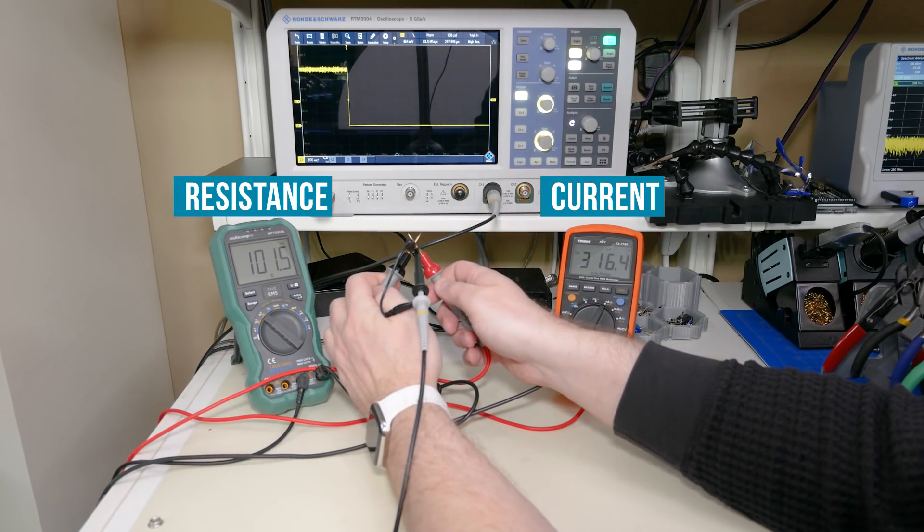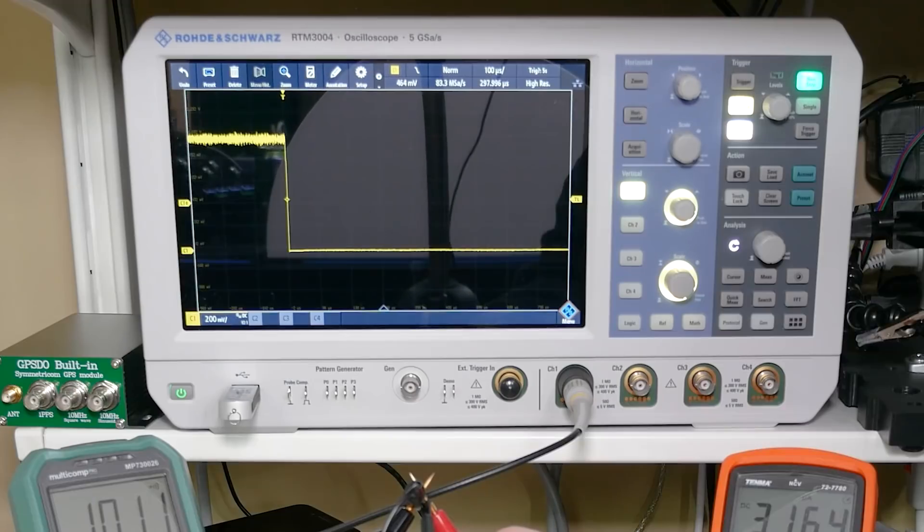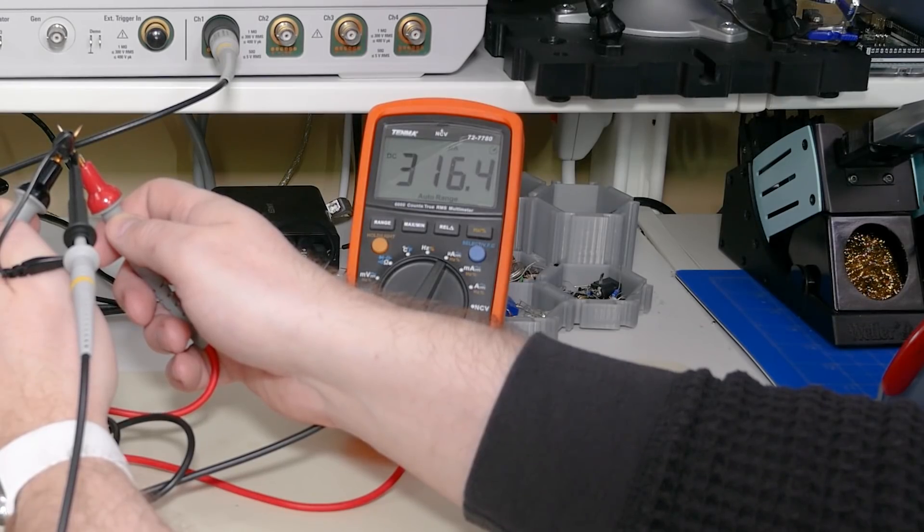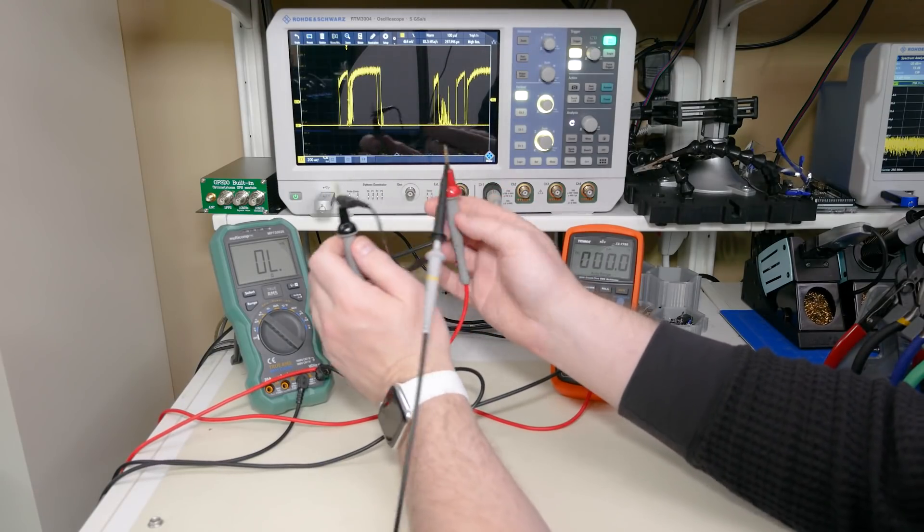When in continuity mode and with the probes connected to nothing, the meter puts out about one volt. When I touch the leads together, the voltage drops down to a few millivolts and the current is around 316 microamps. But, did you notice there's no beep?